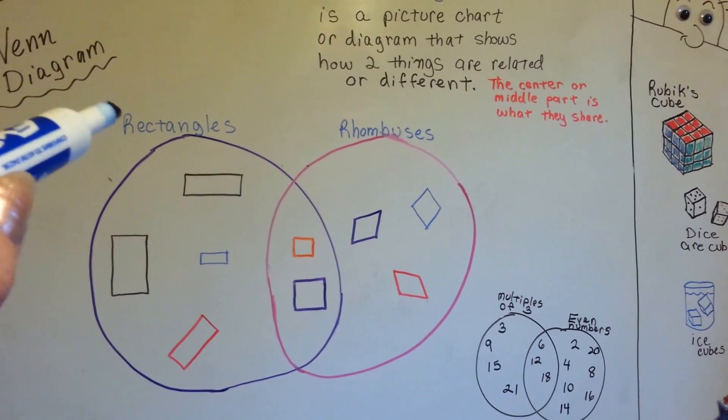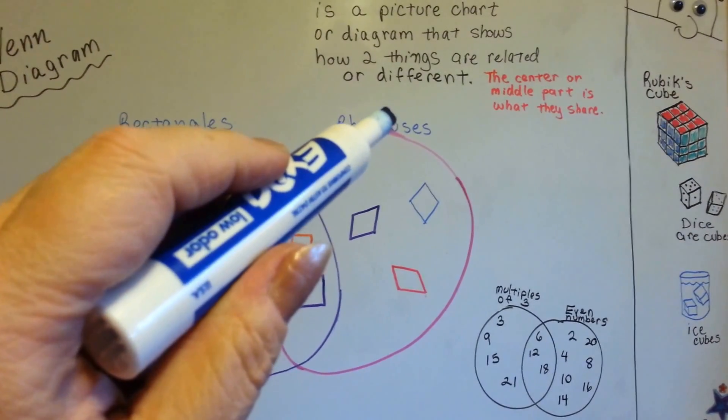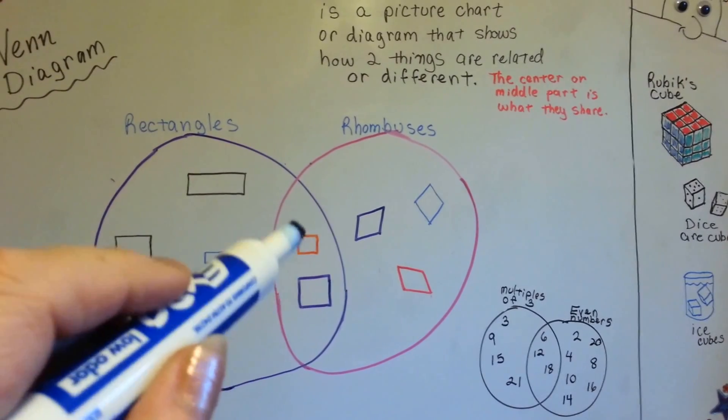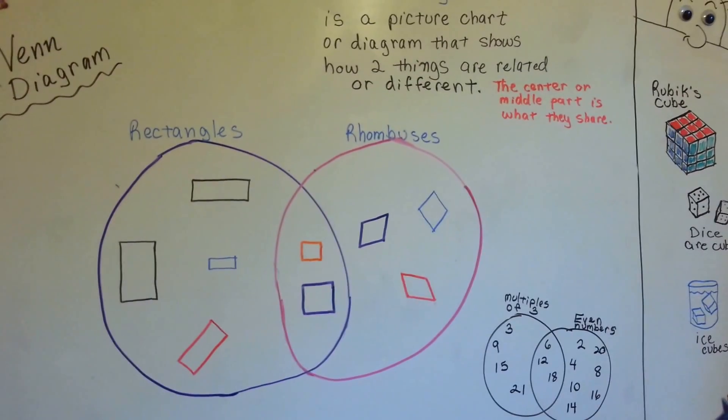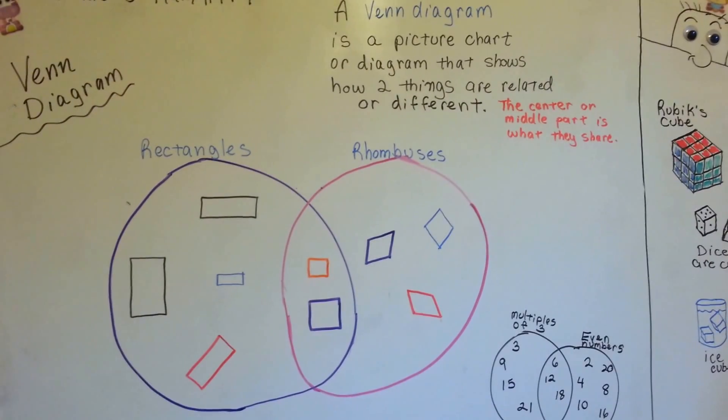Maybe you could put foods you love and foods that are good for you, and in the center you could have foods that you love and are good for you, or whatever you want to make in your Venn diagram.